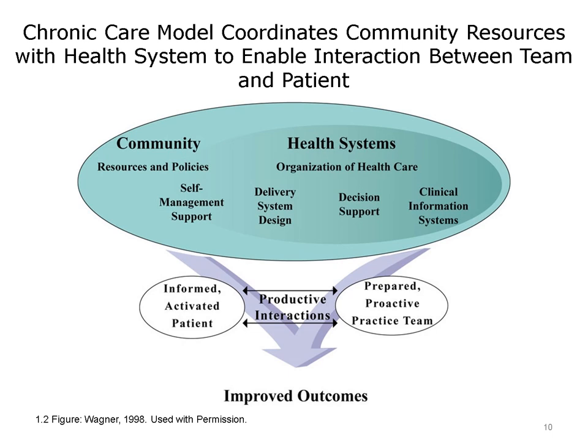All of these factors working together are needed to produce productive interactions between an informed and active patient and a prepared and proactive practice team. You can see that this chronic care model requires much more than a simple prescription or treatment based on an individual clinician-patient interaction. The graphic reminds us that health is not solely the product of the health care system, but the result of broader community and social factors brought to bear on individual conditions. Recent chronic care delivery models continue to expand the intersection of the traditional hospital-based health care system with broader community participants, and health information technology is necessary to support the success of the chronic care delivery model.